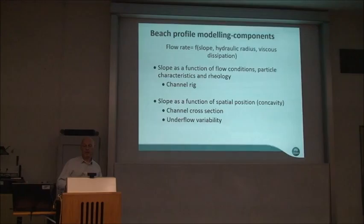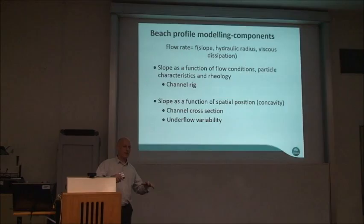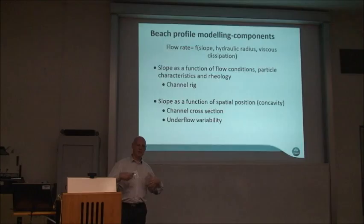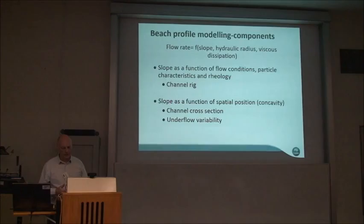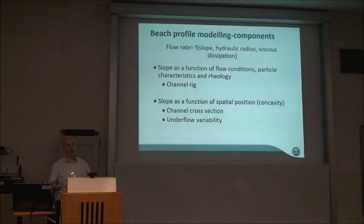We also need to look at slope as a function of spatial position — a radial position down the TSF — because another important thing is that the slope is not constant; it gives a concavity to the beach. Beach concavity is a problem because we're deviating from the nice conical shape that gives maximum volume for storing solid material. Even if we do have a channel model that works, we need one that can accommodate this variation as well — which could be due to a variation in channel shape or underflow variability from the tailings thickener.